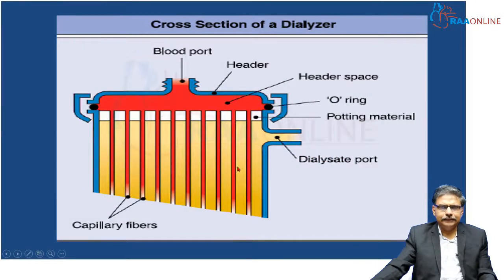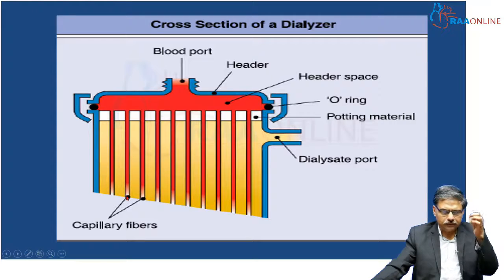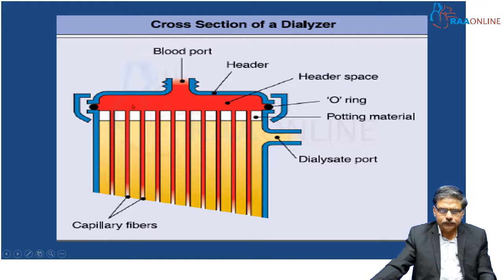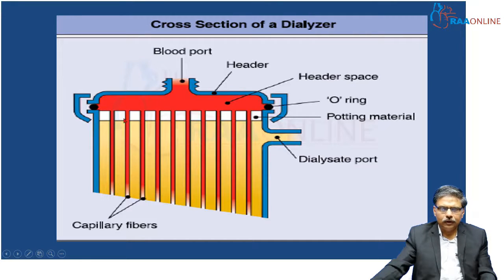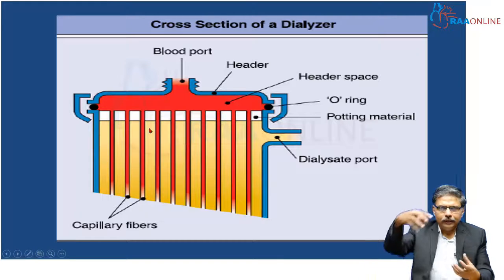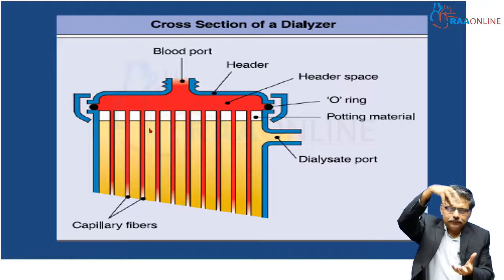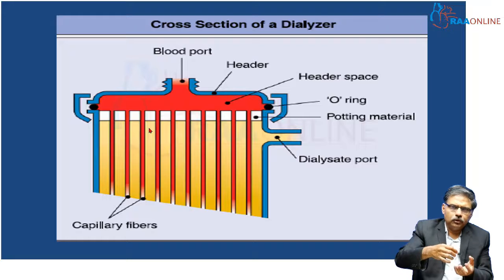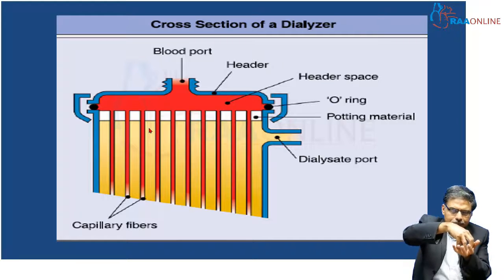If you cut the dialyzer and see, it is made of thin capillary fibers, which are actually made of the semi-permeable membrane. The blood flows into these capillary fibers, and this entire bunch of capillary fibers is bathed in the dialycate fluid — this yellow color thing. It is something like a broomstick; they are all thin capillary tubes dipping in a bath of dialycate.